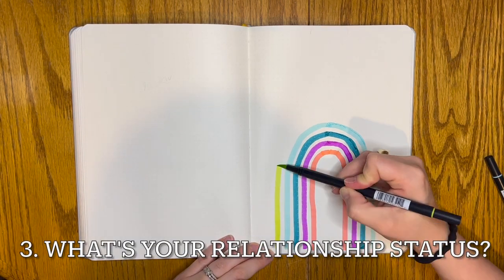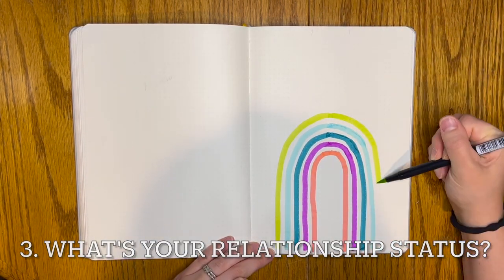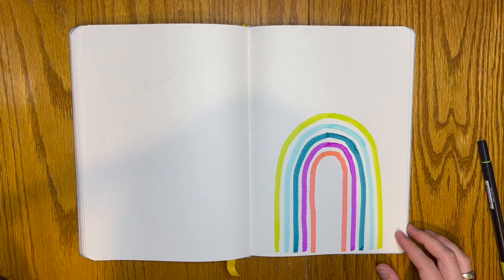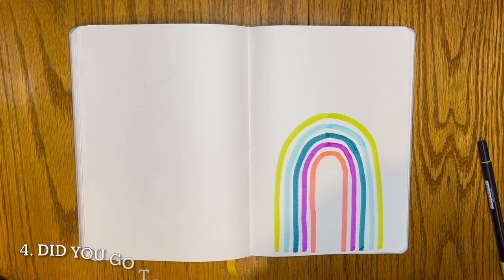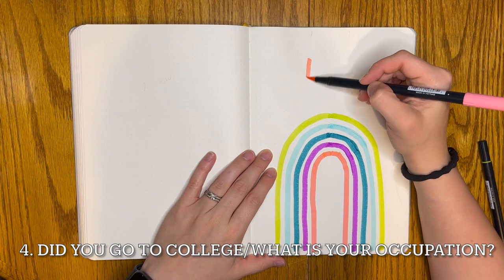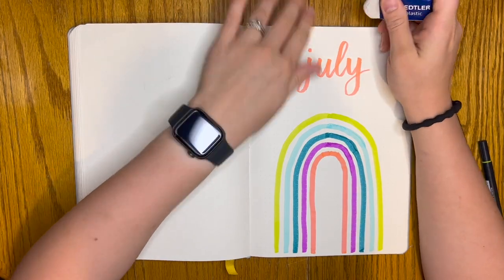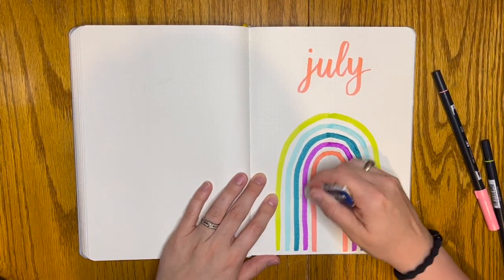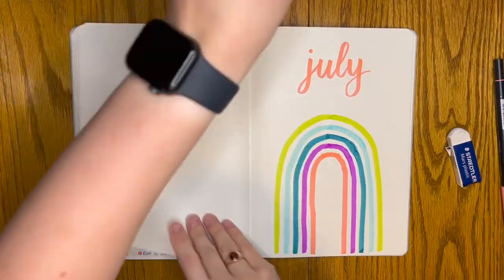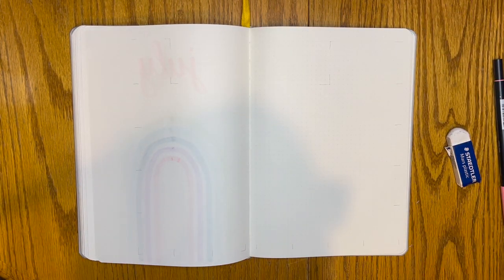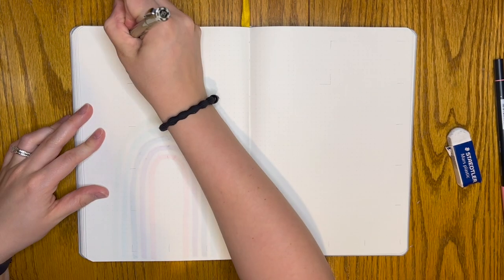Question number three, what's your relationship status? I am happily married, and we have been married for five years. It'll be six years in December. Question number four, did you go to college, and what is your occupation? Yes, I went to college at Luther College in Decorah, Iowa, and I majored in math and religion with a minor in French. I also participated in band and choir while at school. Currently, I work as an administrative assistant at my church.